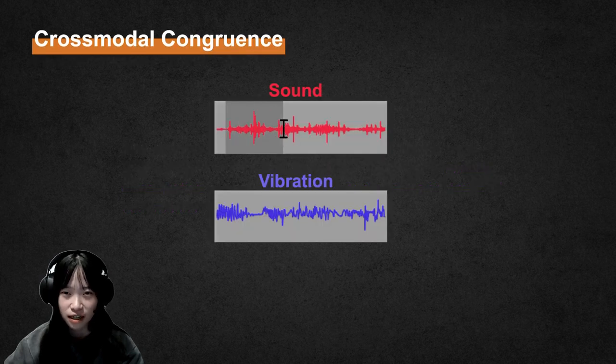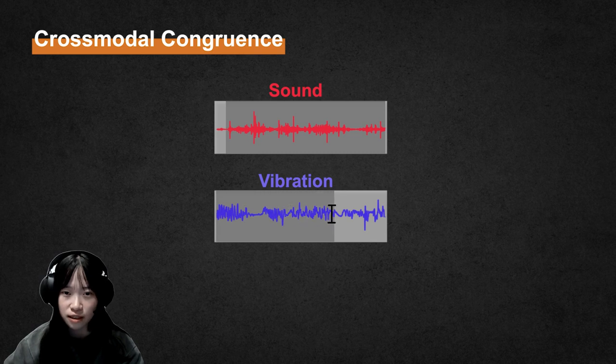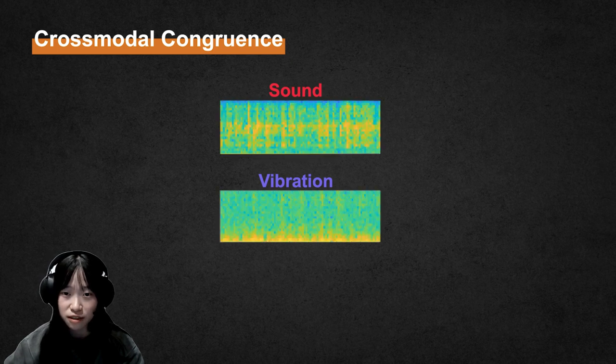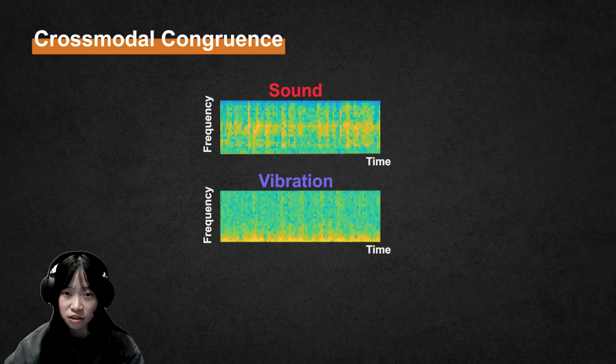First, we synchronize the recorded sound and vibration by canonical correlation analysis to ensure temporal congruence. The synchronous sound and vibration are decomposed into spectrograms of power spectral density with the same number of frequency bands using time-frequency representation.